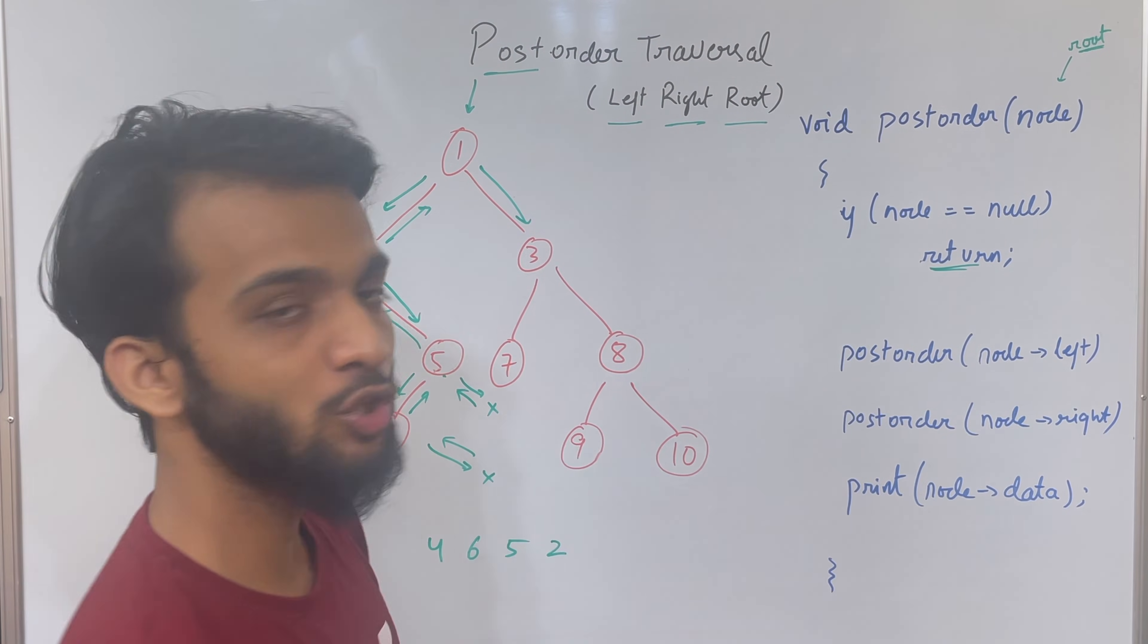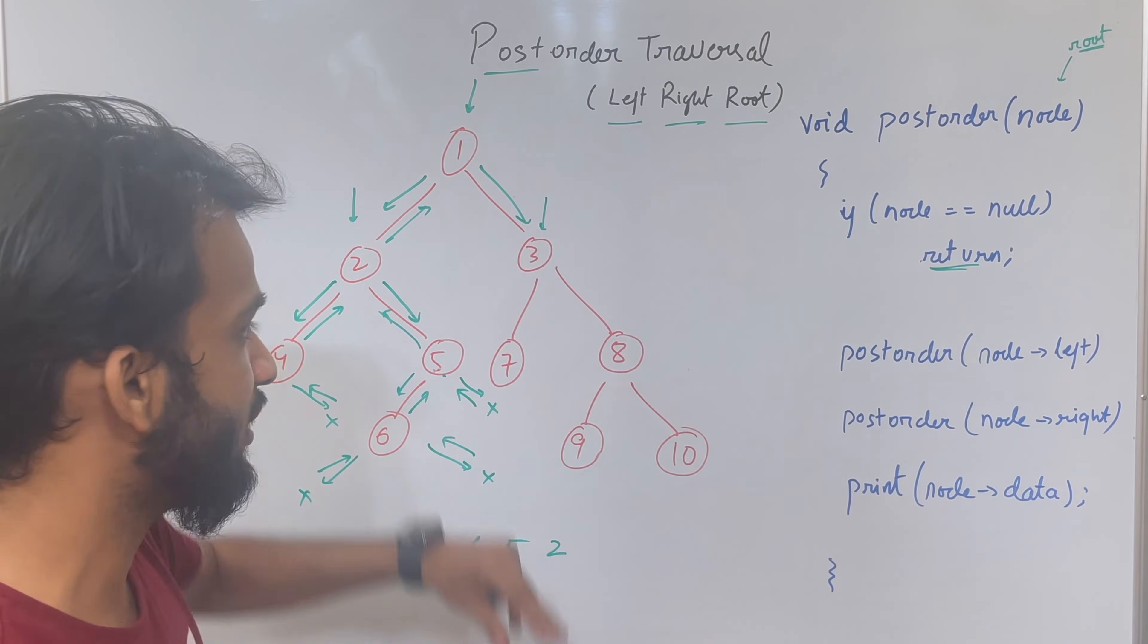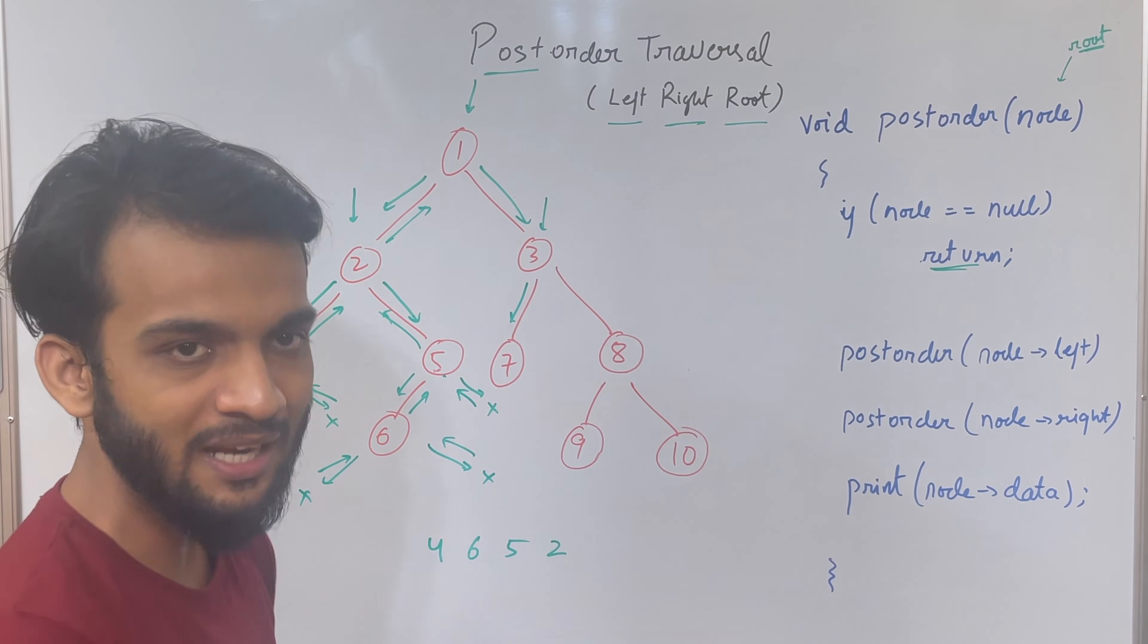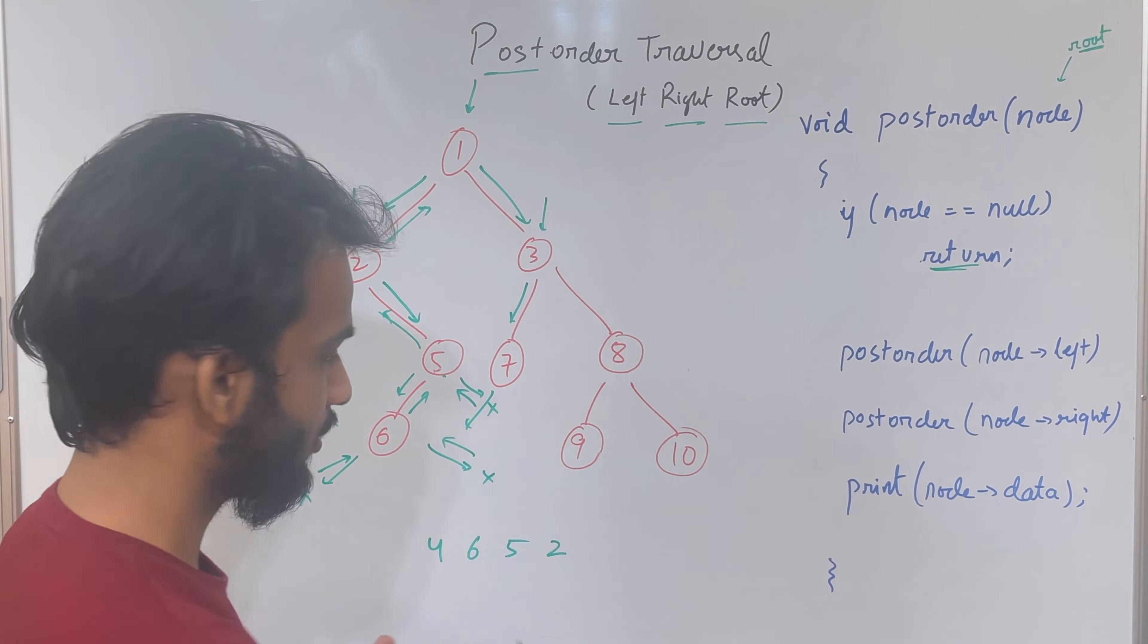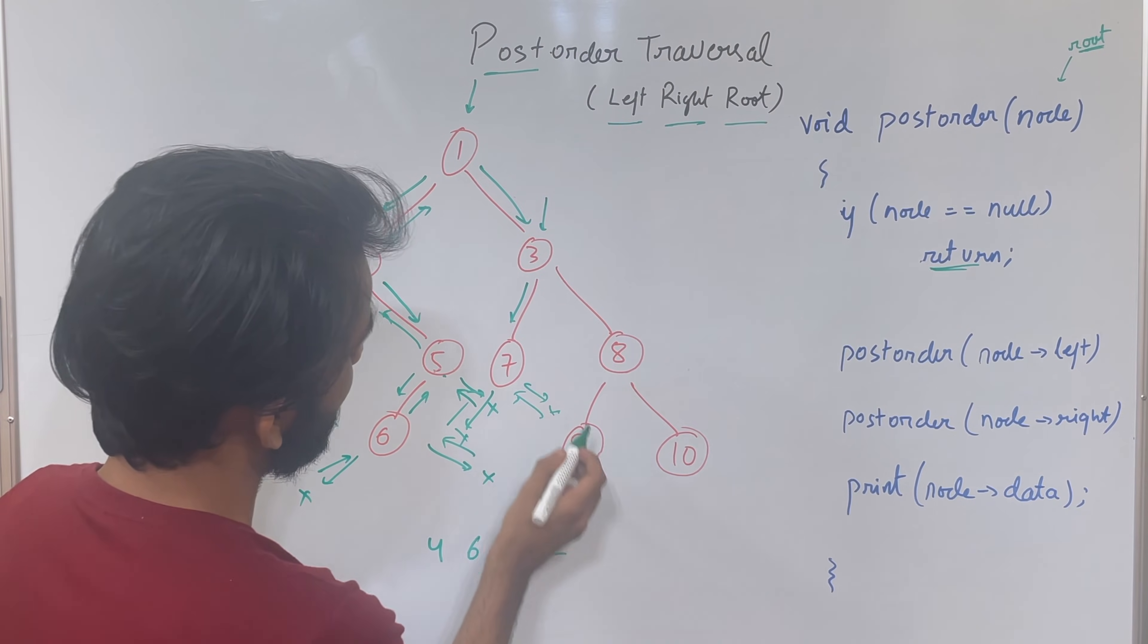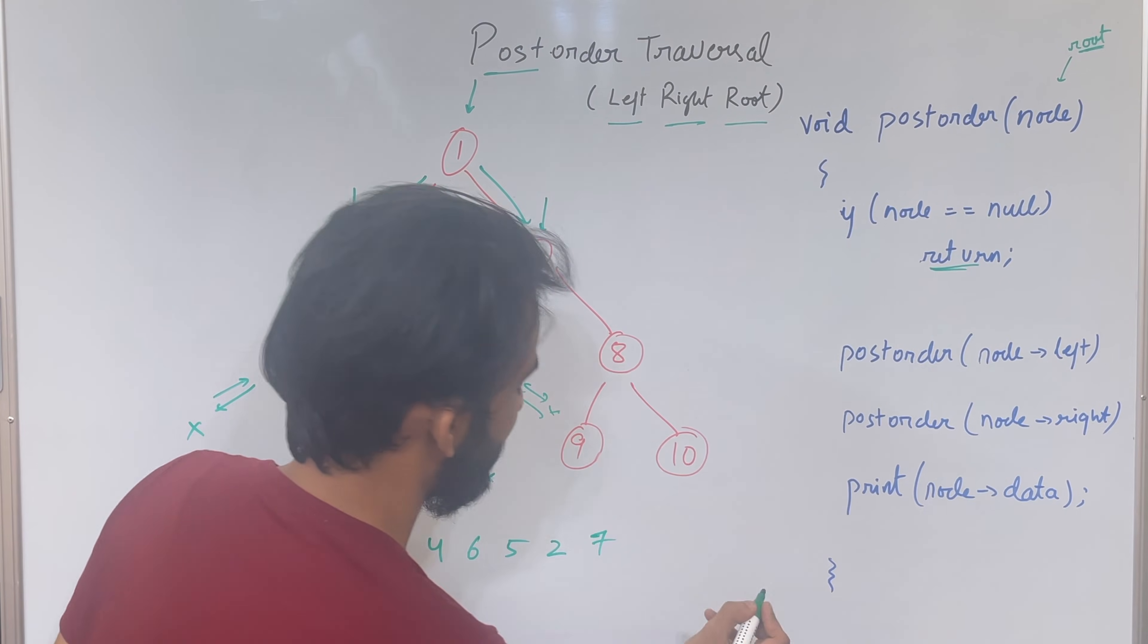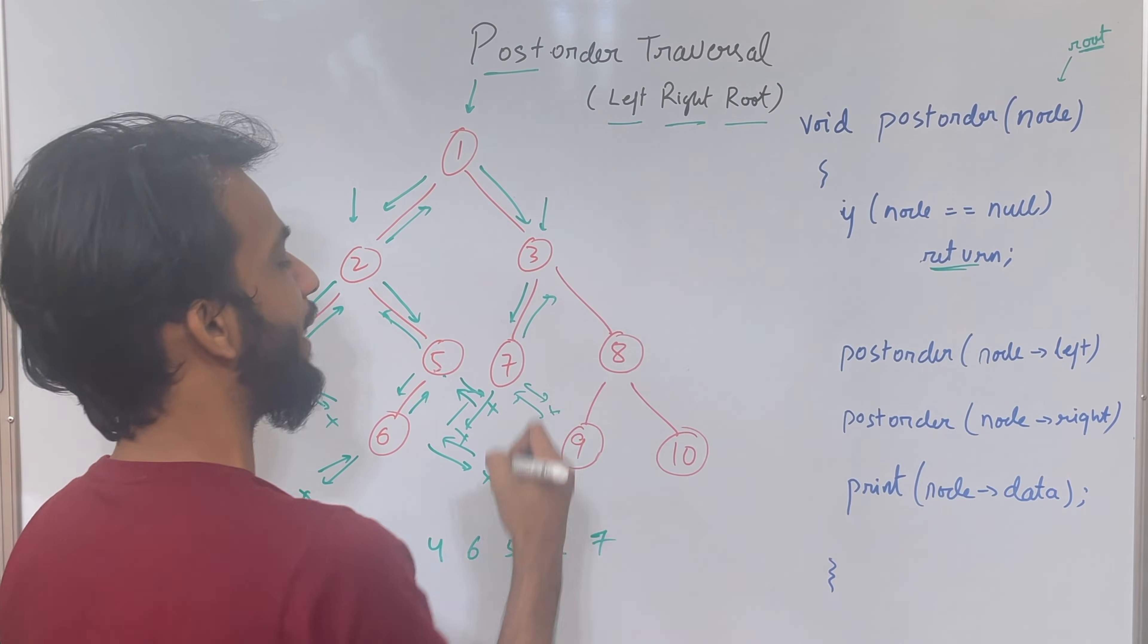When you go to the right you come to 3. When you come to 3 you have to go to the left. Go to the left, again you come to 7. Go to the left, no one, come back. Go to the right, no one, come back. So currently at 7, went to left, went to right, so now print. Once you have printed, go back.